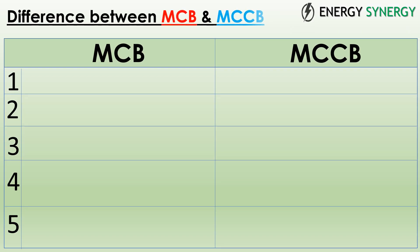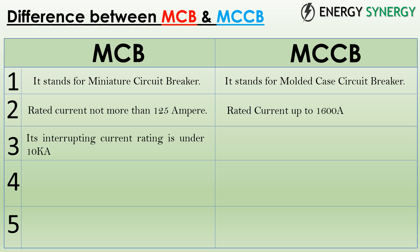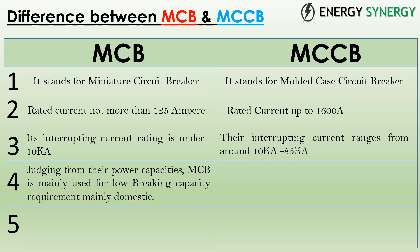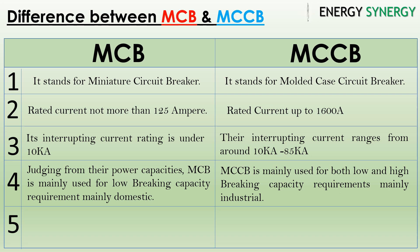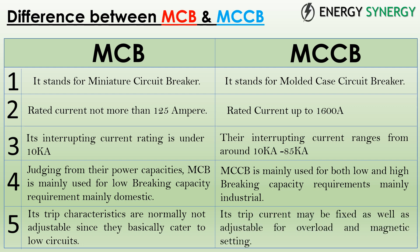Comparing MCB and MCCB: MCB stands for Miniature Circuit Breaker with a rated current of not more than 125 A, while MCCB stands for Molded Case Circuit Breaker with a rated current up to 1600 A. MCB has an interrupting current rating under 10 kA, whereas MCCB ranges from around 10 kA to 85 kA. MCB is mainly used for low breaking capacity requirements, while MCCB is used for higher industrial requirements. MCB trip characteristics are normally not adjustable, while MCCB trip current may be fixed or adjustable for overload and magnetic settings.